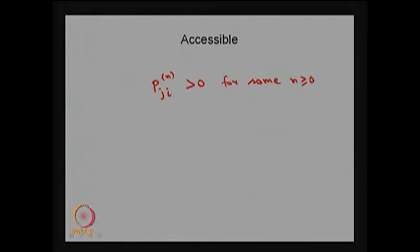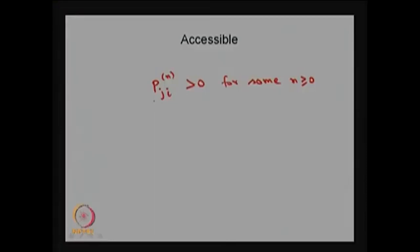Whenever we say state i is said to be accessible from state j, p_{j,i}^{(n)} has to be greater than 0. That means this is the element of the n-step transition probability matrix, and if that element is greater than 0 then we say state i is accessible from state j.